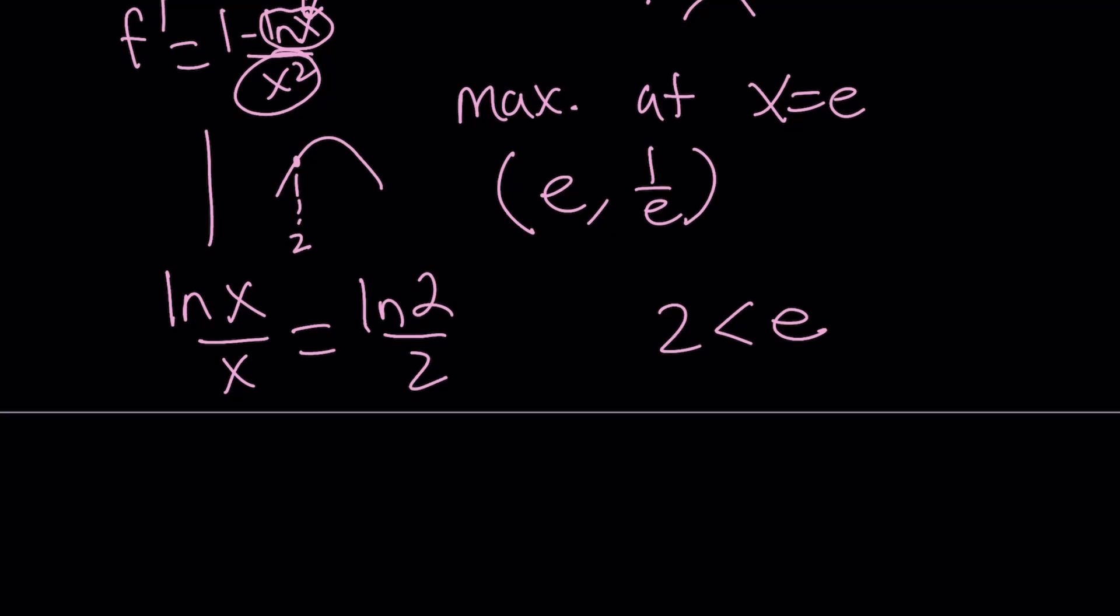That kind of tells me that there must be another intersection point. Because this function attains the maximum value for x values that are greater than 2, which is e in this case, 2.7 something, right?